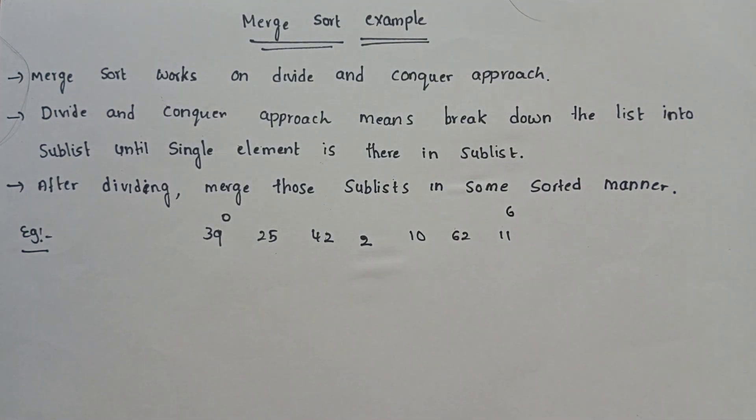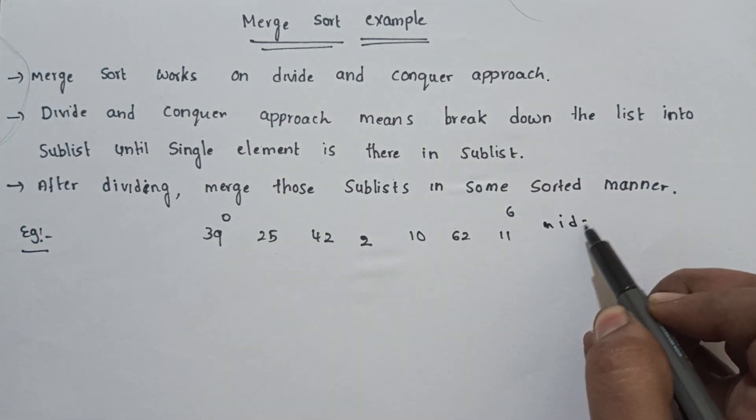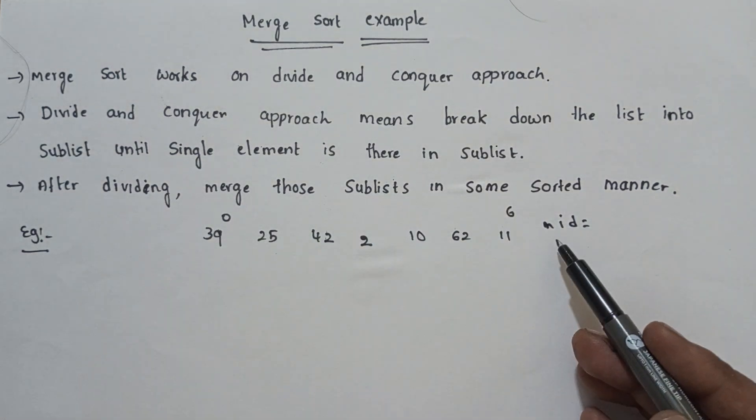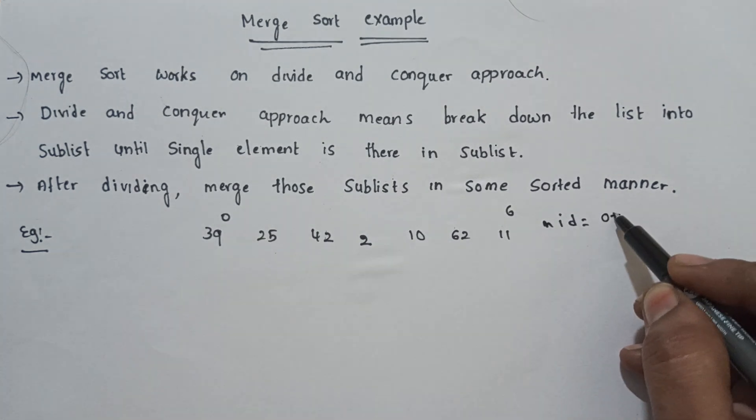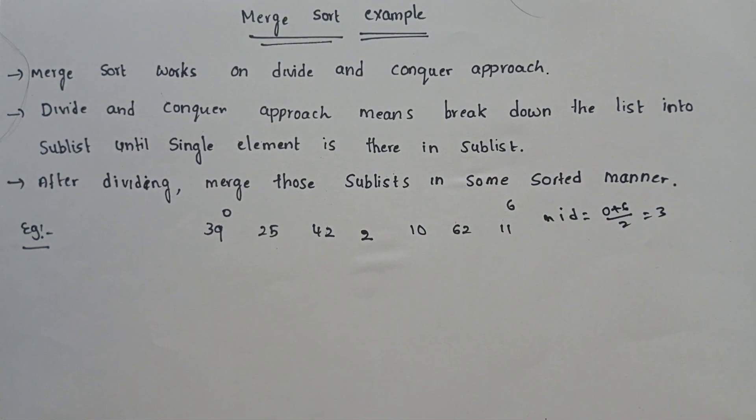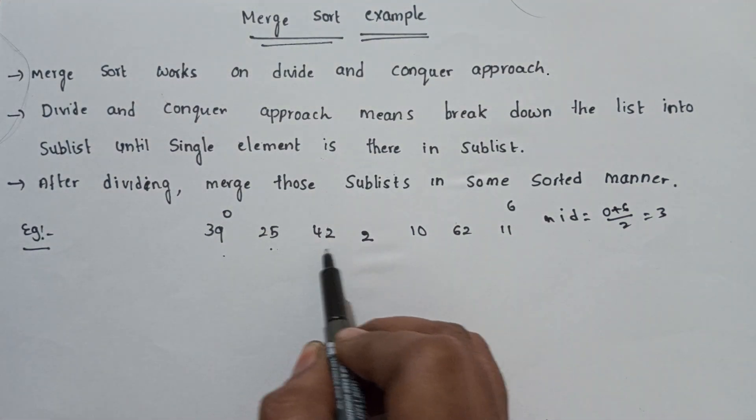We divide. Mid is equal to low plus high by 2. Lower index plus higher index by 2. Lower index is 0, higher index is 6. 0 plus 6 by 2 equals 3.